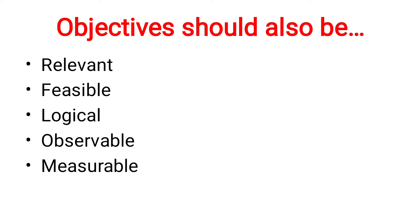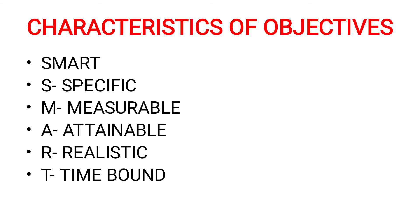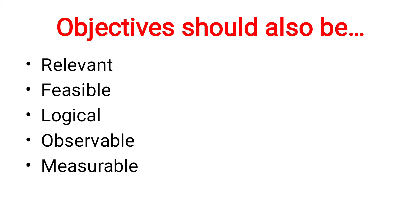The characteristics of an objective are: it should be specific, measurable, attainable — meaning you should be able to achieve it — realistic, and time-bound, meaning these objectives are achieved within a period of time, either short-term or long-term. Other characteristics include: it should be relevant, feasible, logical, observable, and measurable.